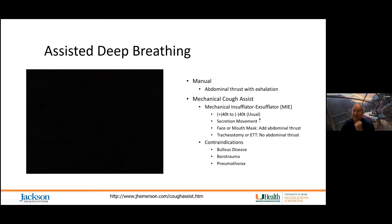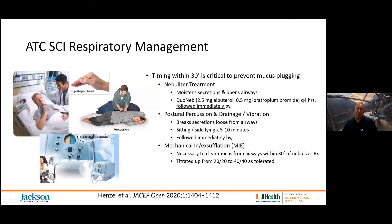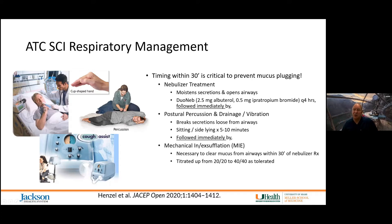We are recommending a respiratory management protocol around the clock as patients come from the ICU to the rehab unit. Ideally, three maneuvers are included within a 30-minute period: nebulizer treatment using duonebs — albuterol and ipratropium bromide — initially every four hours, extending to every six and then every eight hours. This is followed immediately by postural percussion and drainage to break secretions loose, then immediately by mechanical insufflation-exsufflation to clear the thinned mucus from the airways.